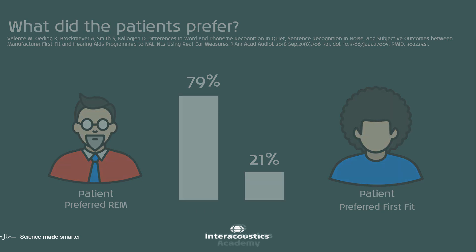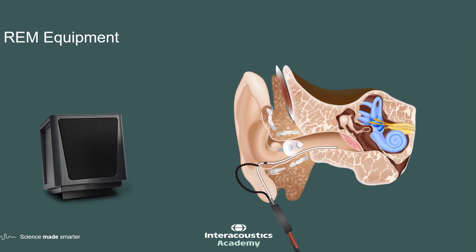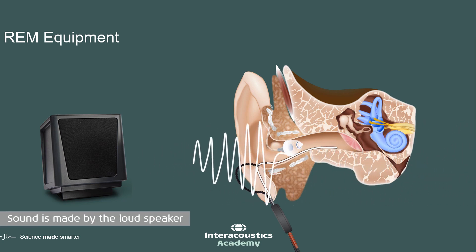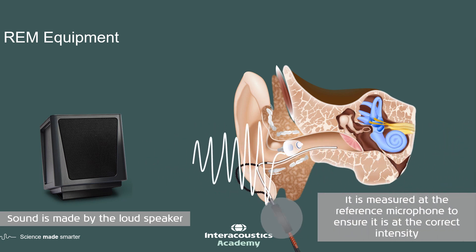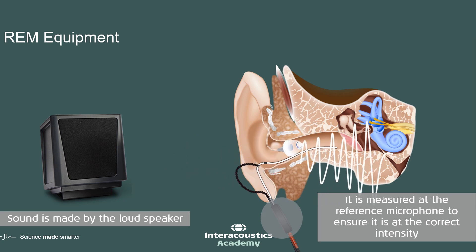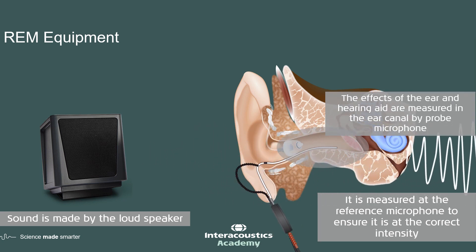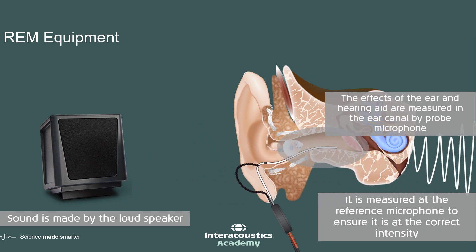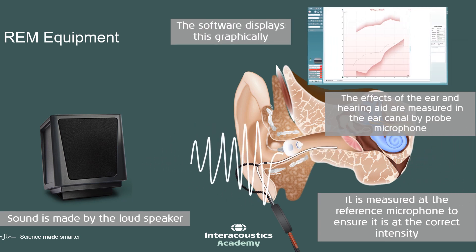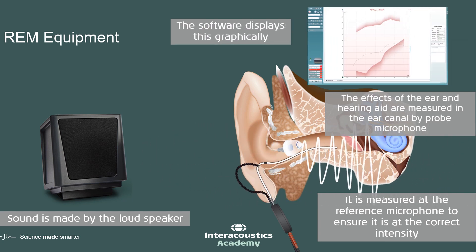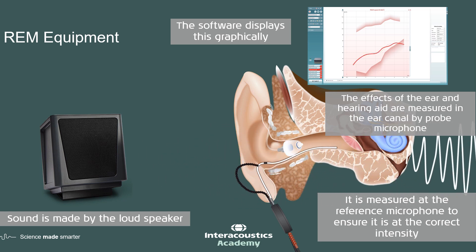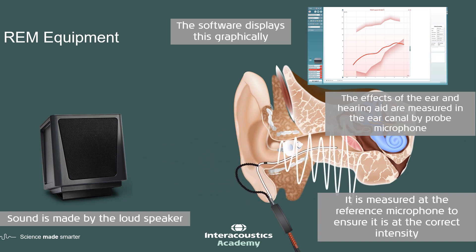So how do we actually perform real ear measurements? A simple diagram demonstrates how real ear measurement works and the equipment needed. The probe and hearing aid are placed into the ear canals, and a speaker plays a stimulus. The sound created by the loudspeaker is measured by a reference microphone, which ensures the sound is at the correct intensity. The effect of the ear and the hearing aid are measured by the ear canal probe microphone. The software then displays this result graphically so that the audiologist fitting the hearing aid knows how much to adjust the gain response of the hearing aid. This is a simplified schematic of the REM process.